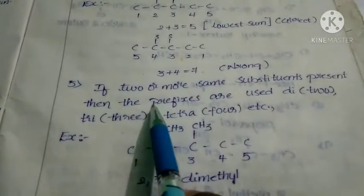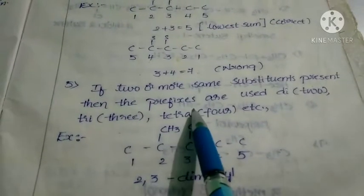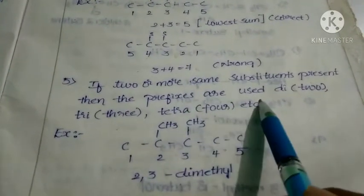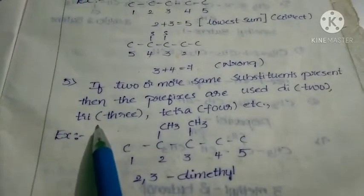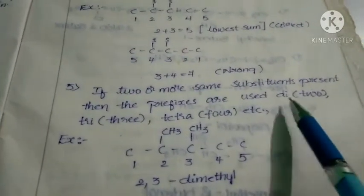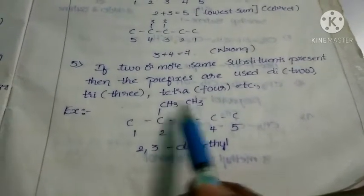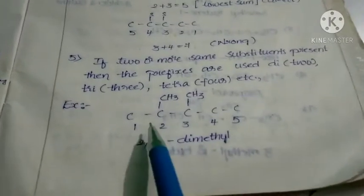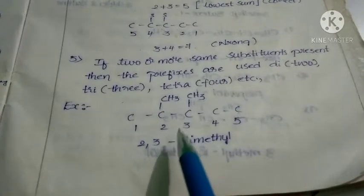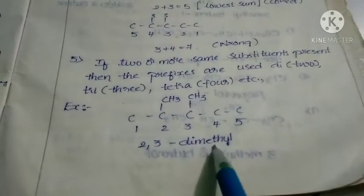If two or more of the same substituents are present, then prefixes are used: di for two, tri for three, tetra for four, and so on. For example, if two methyl groups are present on the second and third positions, the name would be written as 2,3-dimethyl, indicating that the methyl group is present on the second and third positions of the given organic compound.